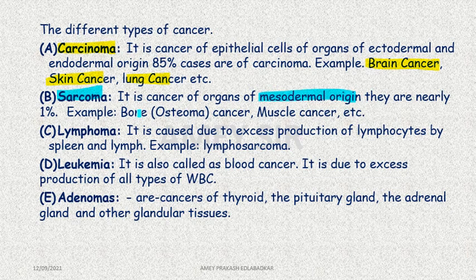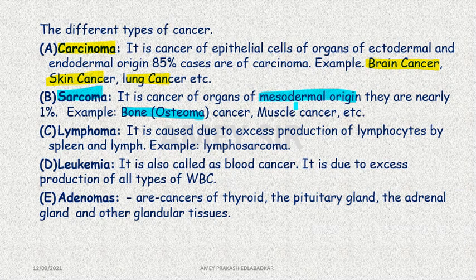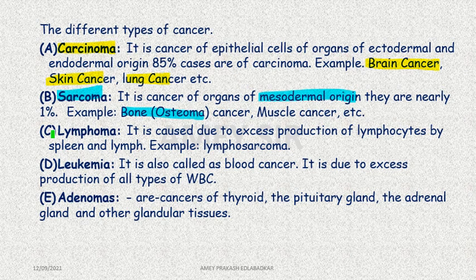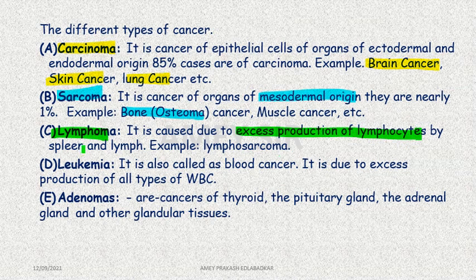Osteosarcoma or osteoma is bone cancer. Muscle cancer is called myosarcoma. Chondrosarcoma is cartilage cancer. Liposarcoma involves adipose tissue. Then we have lymphoma — excess production of lymphocytes in the spleen and lymph nodes, example: lymphosarcoma.